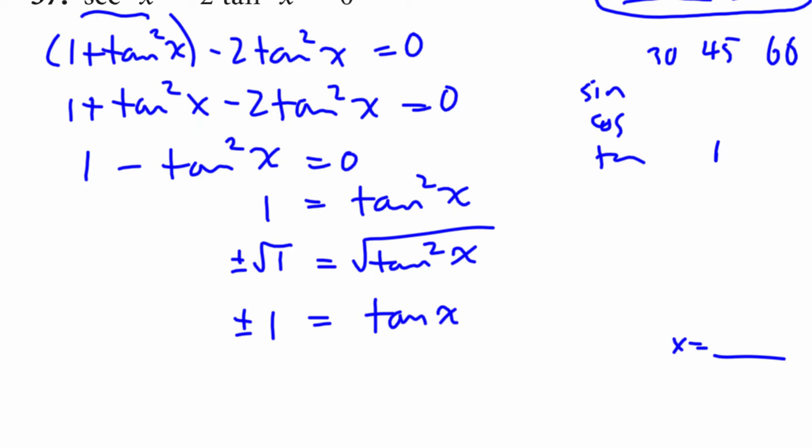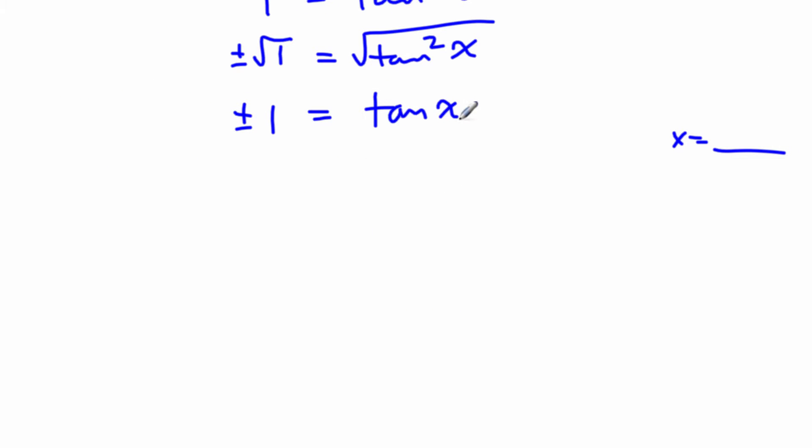So right here, I can say that x will be equal to... And what I could do here is I could just arc tan this side and arc tan that side. And if you arc tan 1, it comes out to 45 degrees.